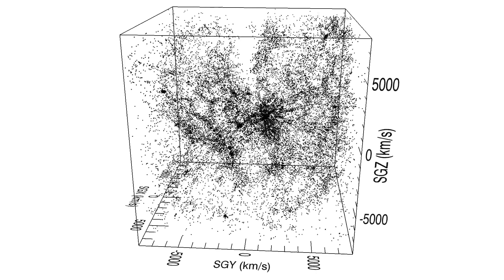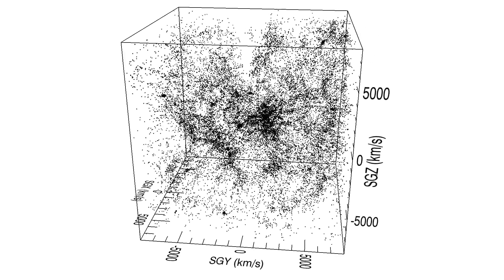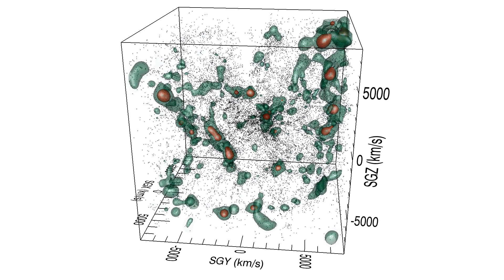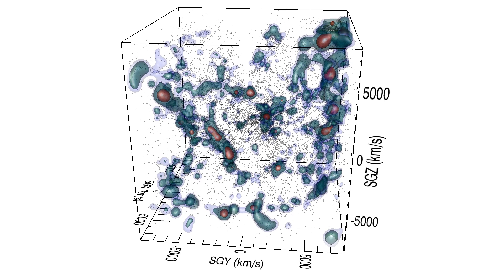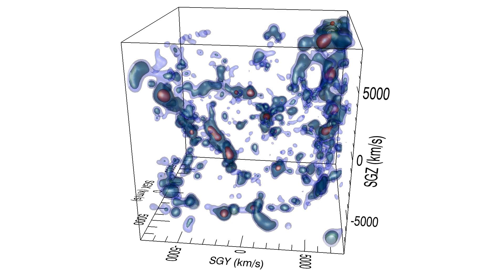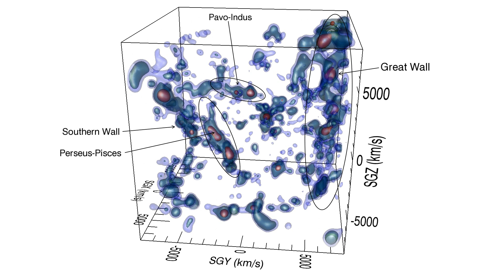Here we compensate for the increasing loss of galaxies as a function of distance. We don't know exactly where the missing galaxies lie, so we associate them with the galaxies that are seen and then smooth and show contours of the smooth density field. Now, the local region appears dramatically reduced in importance. The main structures are the Great Wall and the Percy Species Filament with the Saffern Wall. Pavoindus is also significant.